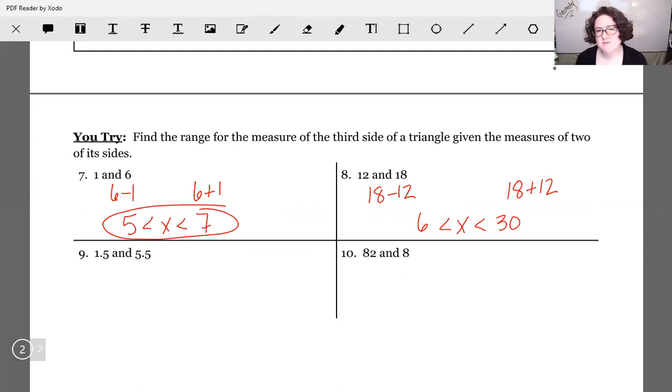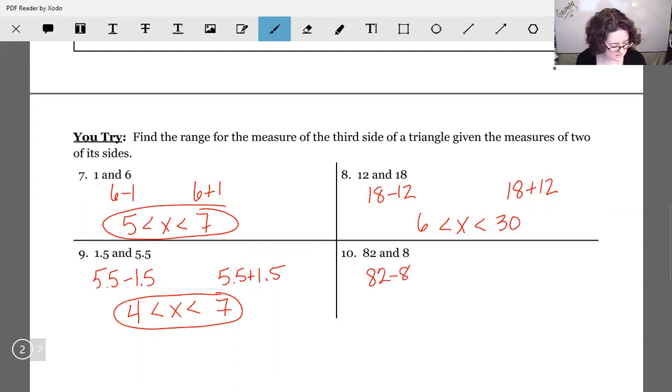Go ahead and pause the video and try the last two on your own. If you followed the steps, even though we have decimals, this is still going to work. We would want to do 5.5 minus 1.5, and if you're not quite sure, plug it in the calculator. That's going to give us a 4. Then we have to do 5.5 plus 1.5, which will give us a 7. So our X is sandwiched in between 4 and 7. 82 and 8, doesn't matter that the numbers are really far apart. 82 minus 8 will give us a 74, 82 plus 8 gives us a 90, and our X is sandwiched in the middle.